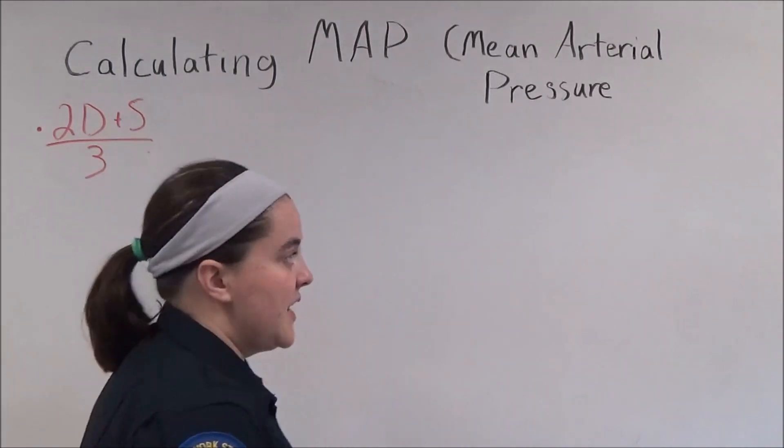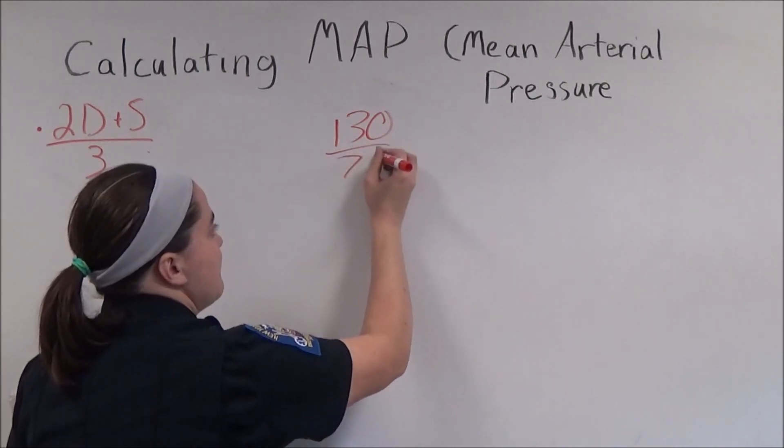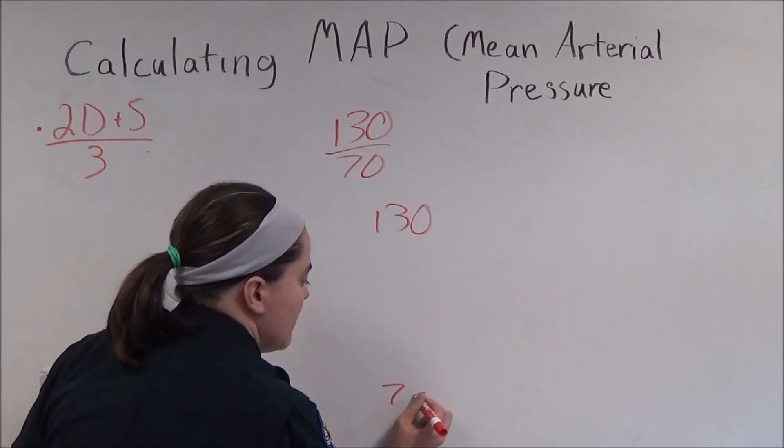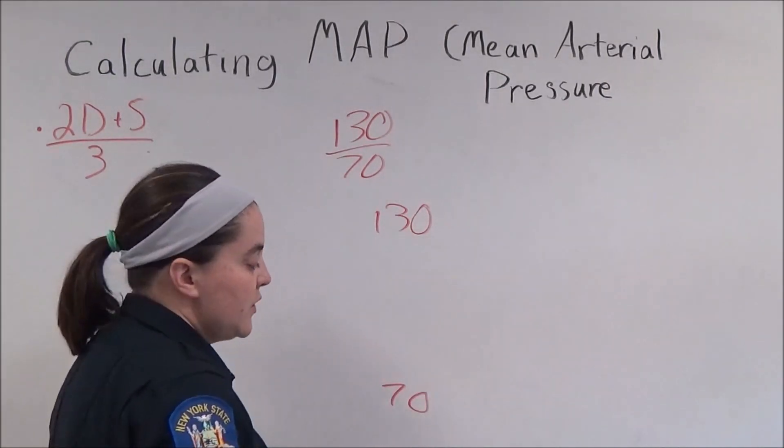So let's take, for example, the blood pressure 130 over 70. If that could be graphically represented as a rectangle, it would look like this.